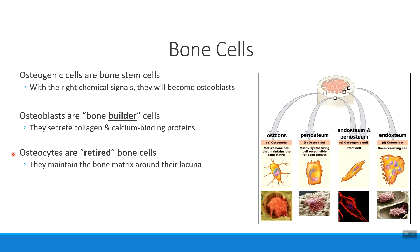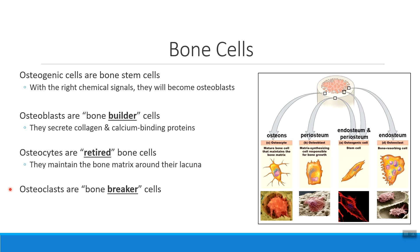Osteocytes are the last in the progression of this growth. We started with a stem cell that turned into a builder cell that became a retired cell. There's one other type of bone cell that's really important but it doesn't come from this same lineage. That kind of cell is called an osteoclast — a bone breaker cell. That's what 'clast' means: a breaker.